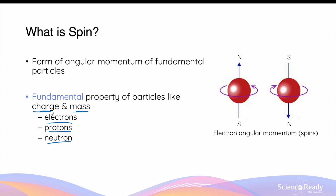Spin is a fundamental property of these particles, just like charge and mass. A particle could be charged — either positive or negative — and it will also have mass. Spin is another property that gives rise to magnetic characteristics. For example, the spin of an electron produces its own magnetic field, and depending on the direction of that angular momentum or spin, the orientation of the electron's north and south pole will differ.